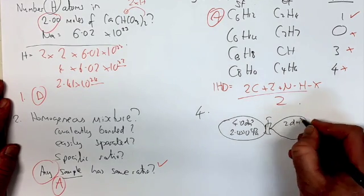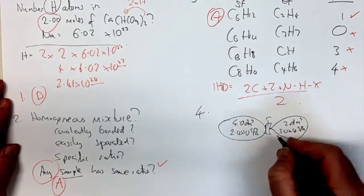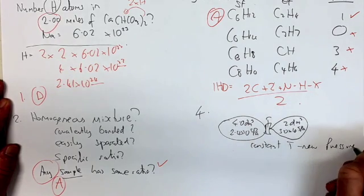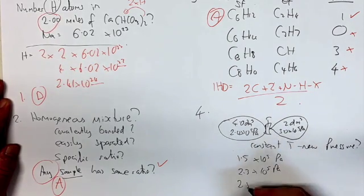Four, Dalton's law of pressures. This is sum of the two pressures when we open the valve. So two add three by 10 to the five pascals, giving an answer of D.